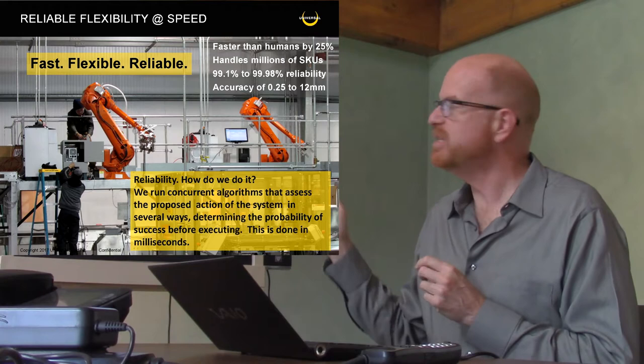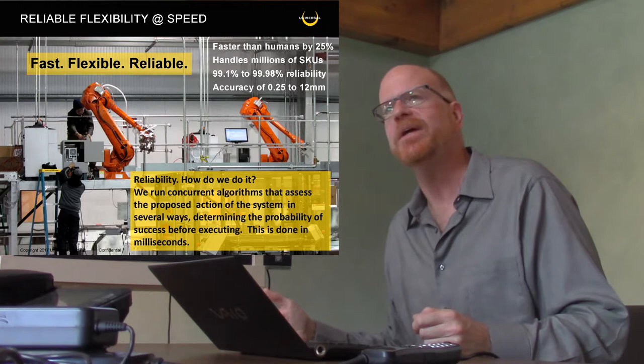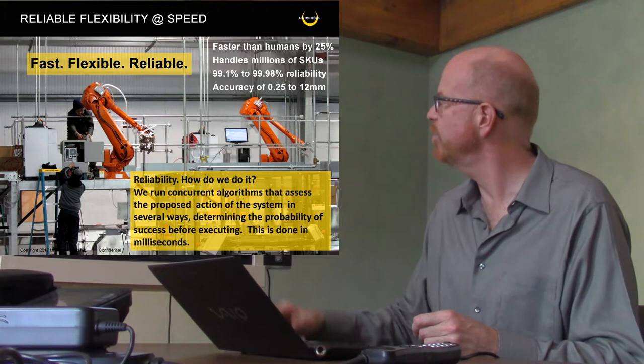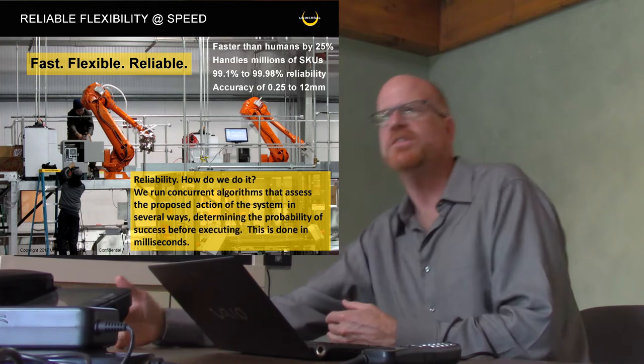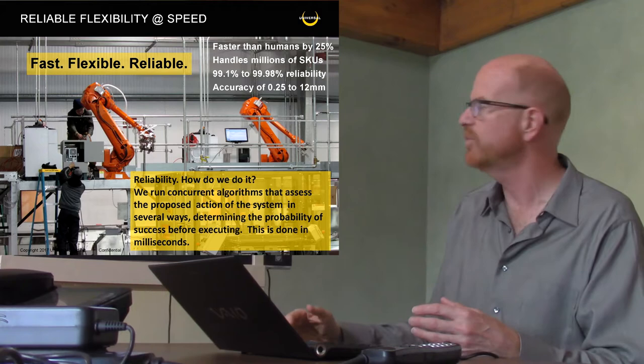We're really quite proud about this. The flexibility at speed is reliable flexibility at speed. When we came out of the gate, we were like 95% there. Well, that's not good enough for supply chain. So we spent, and this was back in 2010, a few years really pushing up our reliability metrics. You can see that reliability is now up where it needs to be to be a solution. What does reliability mean in this kind of application? It means how often does a human have to intervene. This is not mean time between failures. What it means is, does a human have to step in and help the robot system?